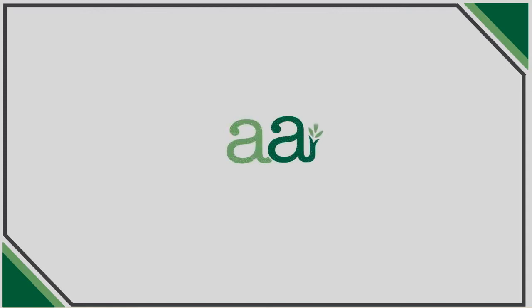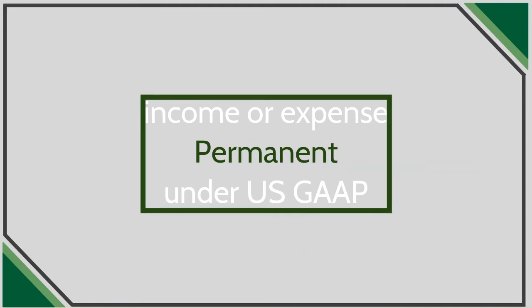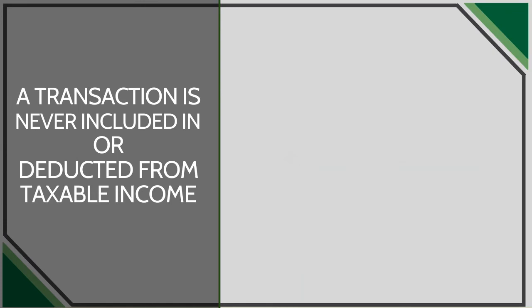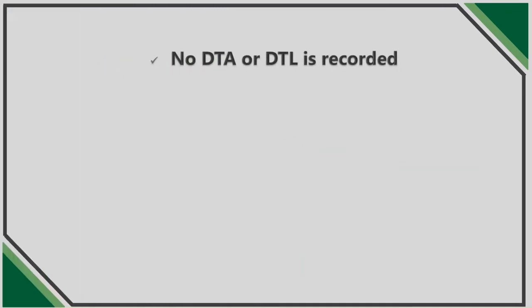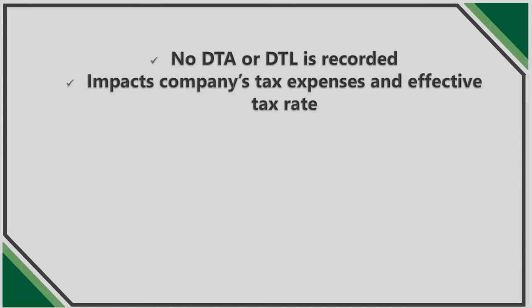Welcome to Accounting with Audra. This is the third episode in a multi-part series on accounting for income taxes under ASC 740. In this episode, we're going to talk about permanent differences, which occur when a transaction is treated as income or expense for book purposes in accordance with U.S. GAAP, but is not for tax purposes under the Internal Revenue Code. No deferred tax liability or asset is recorded since the difference is permanent and will not reverse over time. When this occurs, the effective tax rate of a business is impacted.